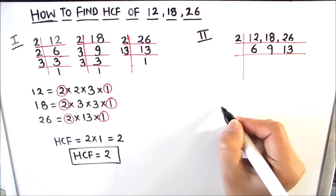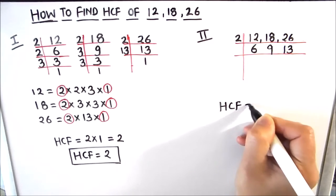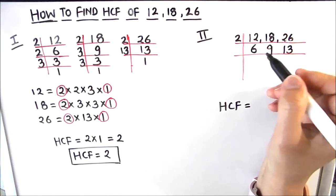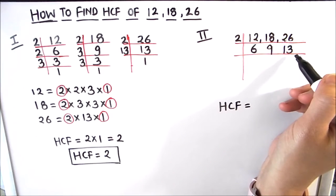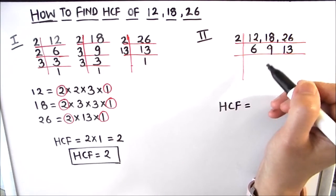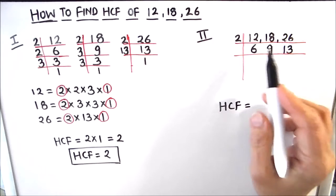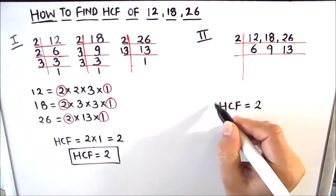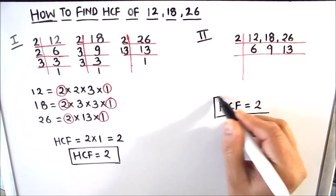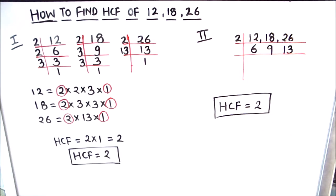Now we look for a number that divides all three remaining numbers fully. If we cannot find any such common factor, we stop the division. Looking at 6, 9, and 13, they have no common factor. So we stop here. The only common factor on the left-hand side of the ladder is 2, so 2 is the HCF. Whenever there is no common factor among the numbers, we stop, and the product of numbers on the left side is the HCF.